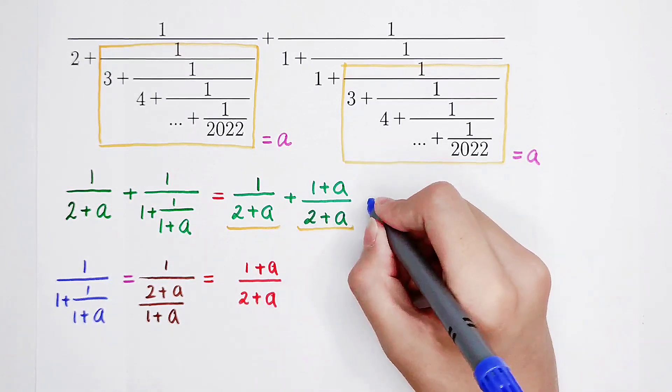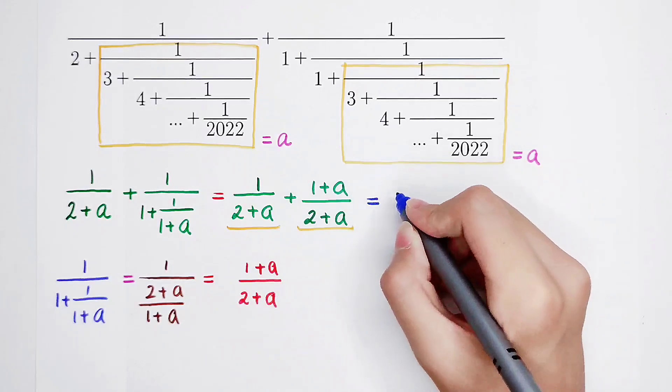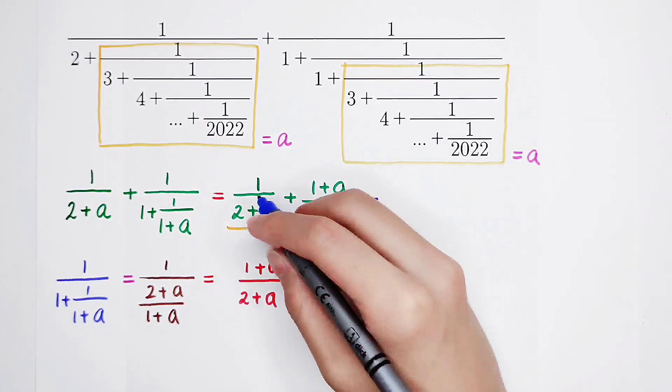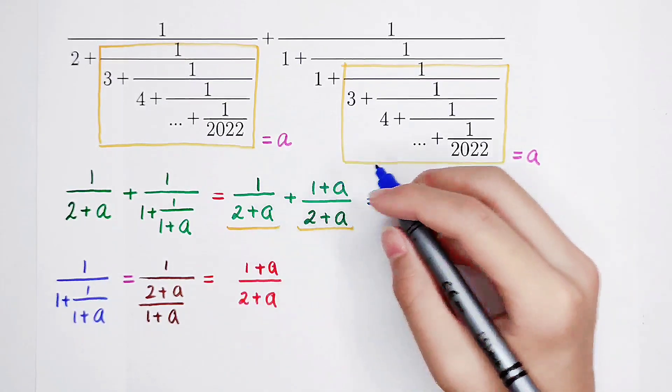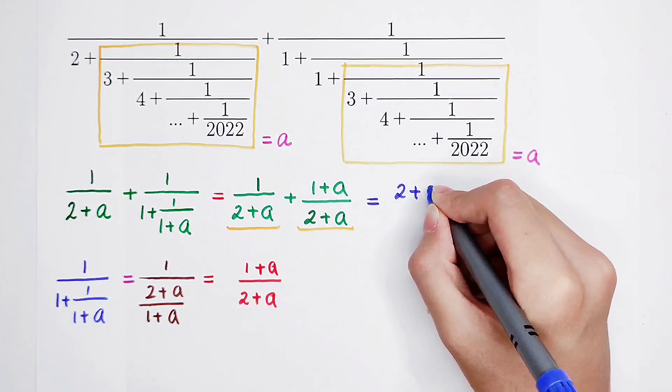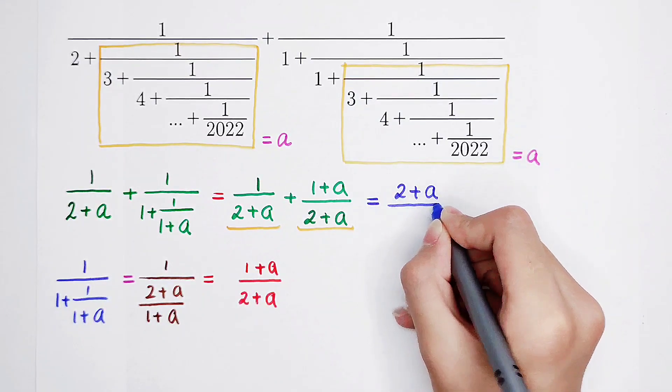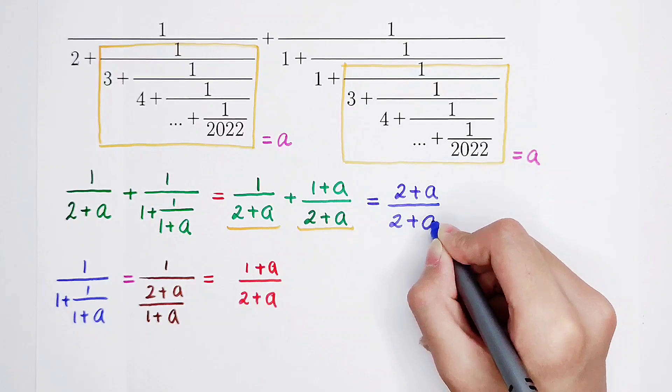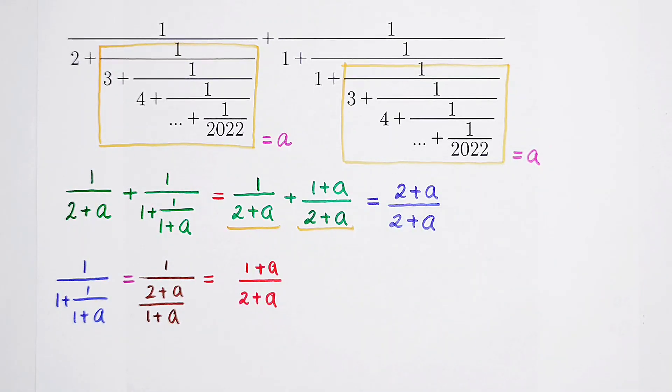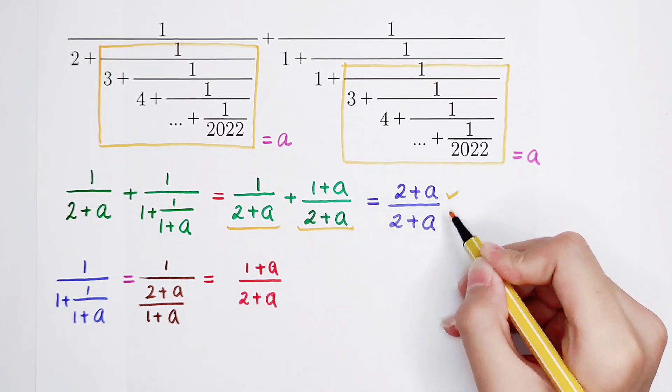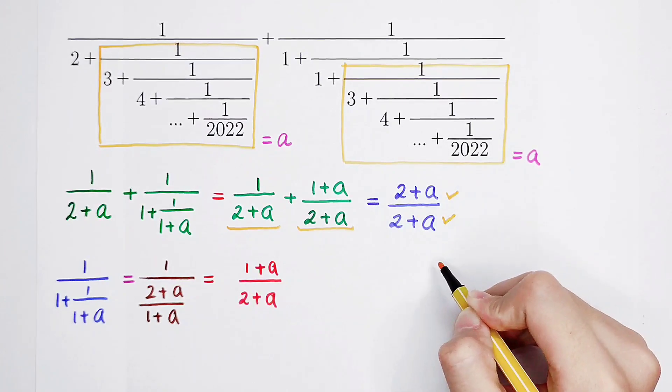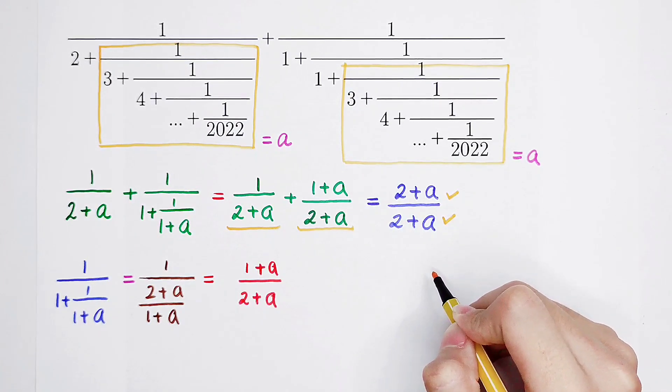You just get sum of the numerators. So 1 plus 1 plus a is 2 plus a over 2 plus a. Now you can see the numerator and the denominator are both 2 plus a. So they have the same value.